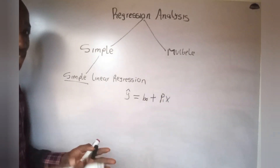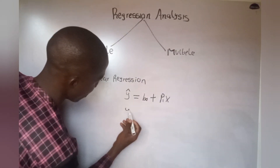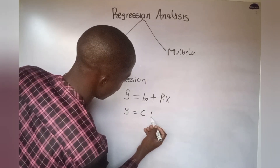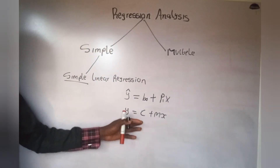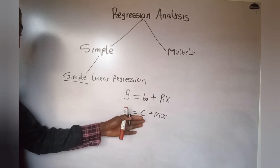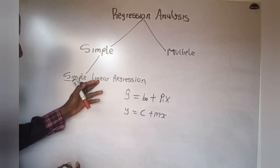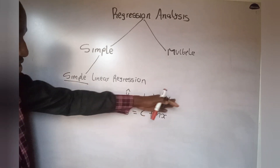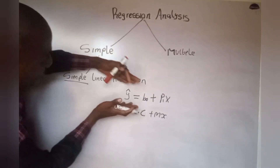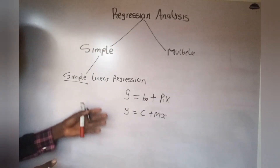If you look at this equation, you realize it is synonymous with the equation of a straight line: y = c + mx. This is an equation of a straight line. If you compare the two equations, you will see they are synonymous — that is why we represent this as a simple linear regression, because after plotting our graph we are going to obtain a straight line.